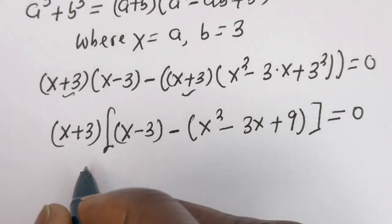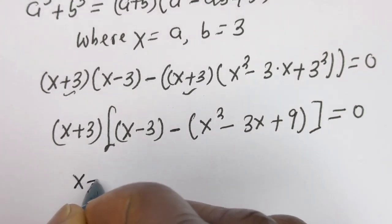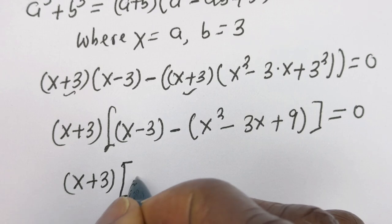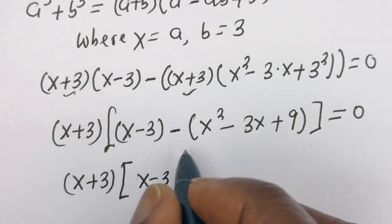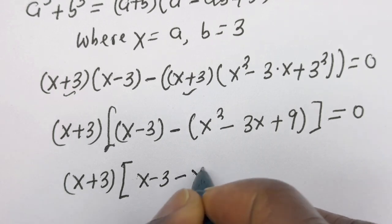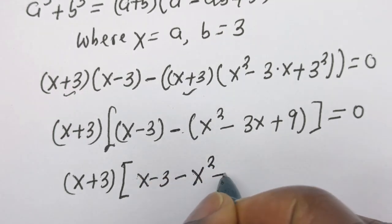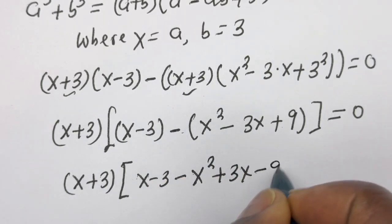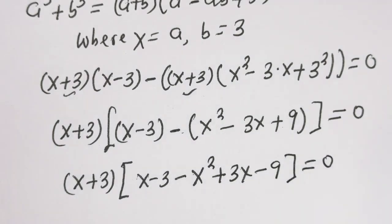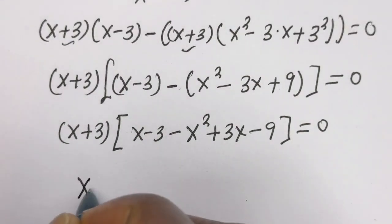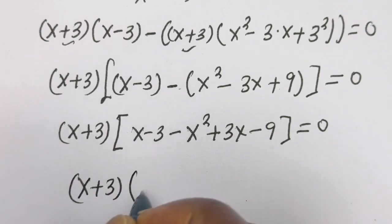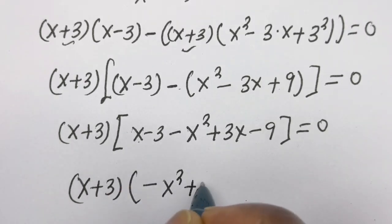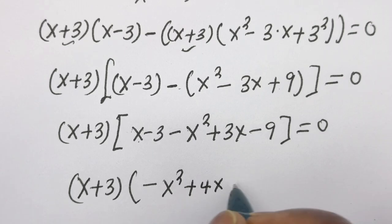Now let's simplify. We have s plus 3 bracket, then s minus 3, minus 3 times s, plus 3 times s, the minus 3 plus 9 giving minus 9, then simplified: minus s squared plus 4s minus 9 minus 12, is equal to 0.